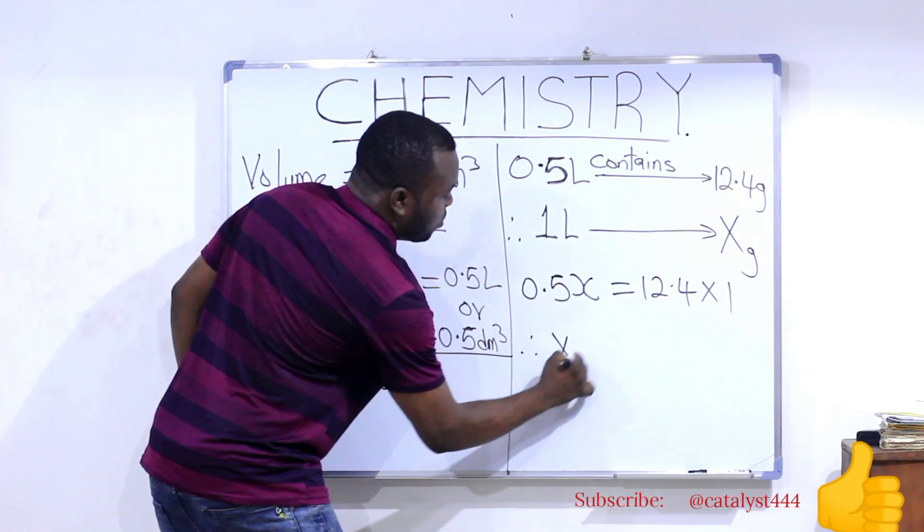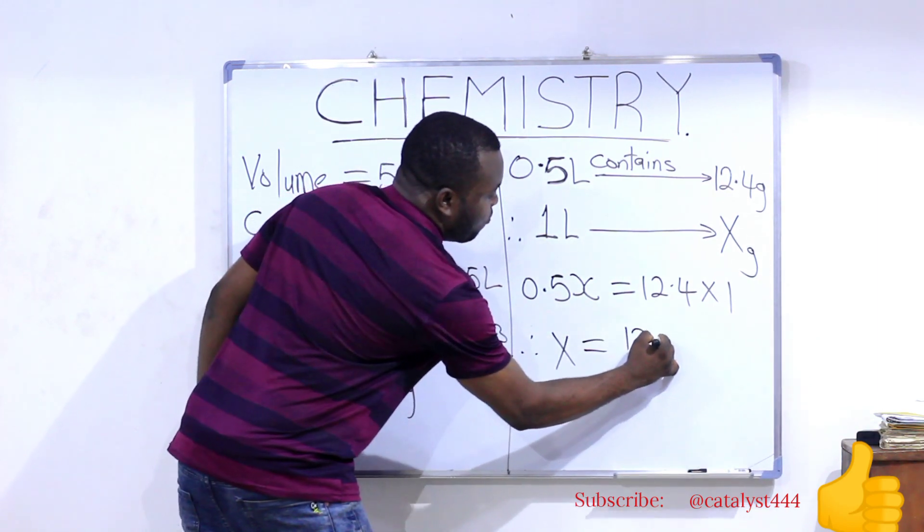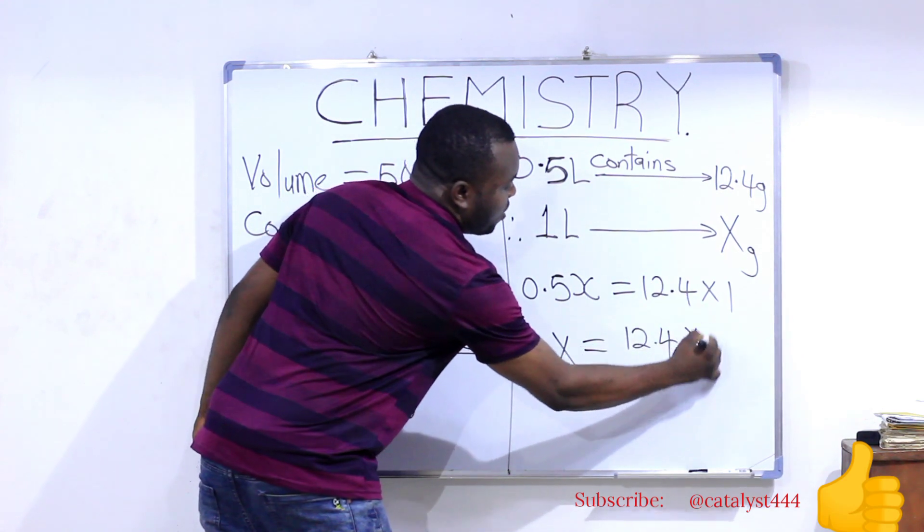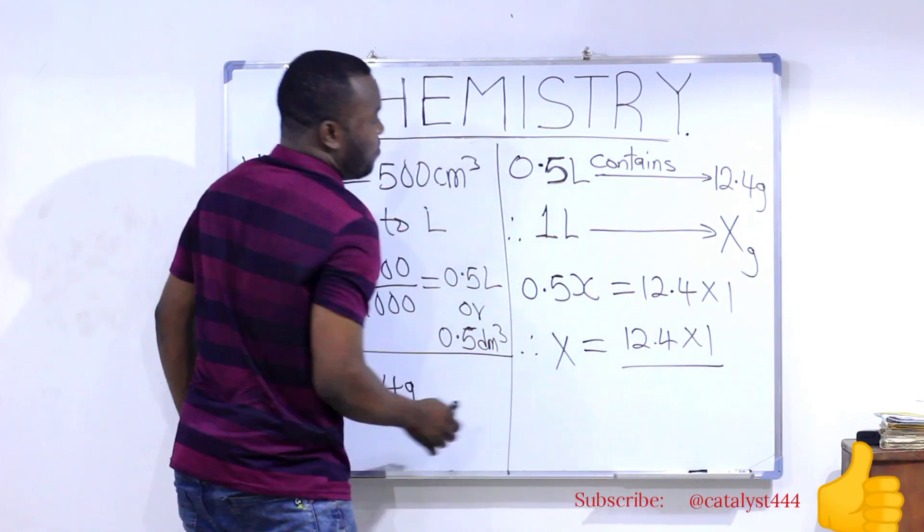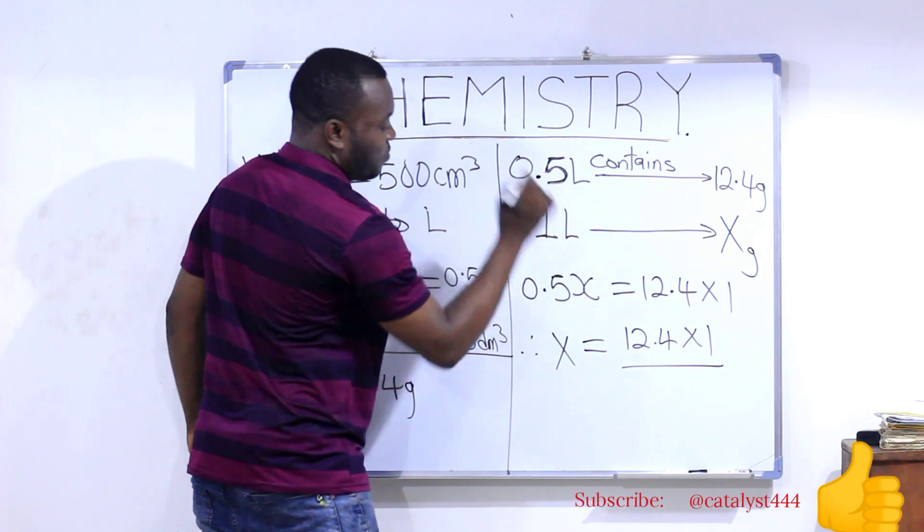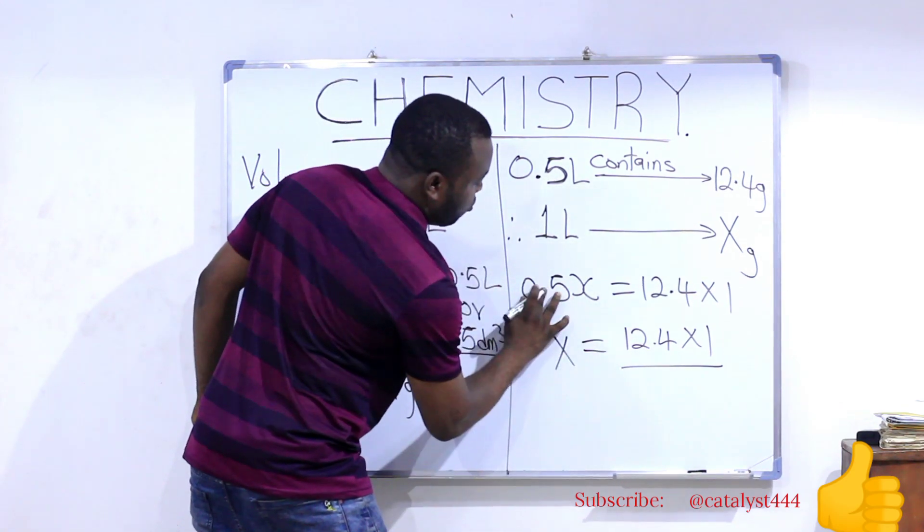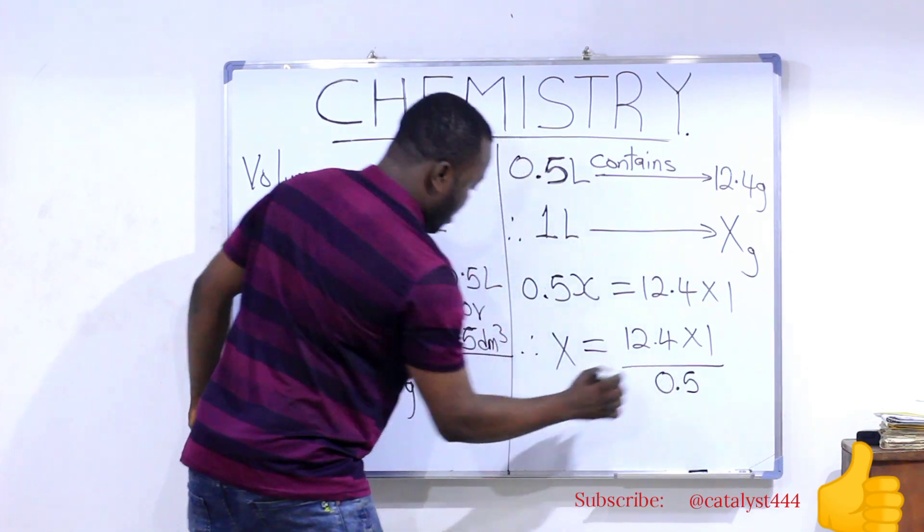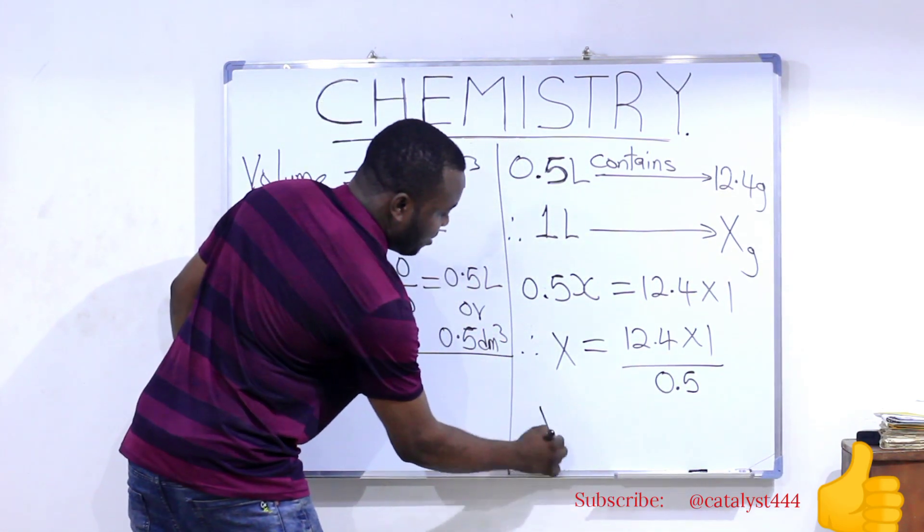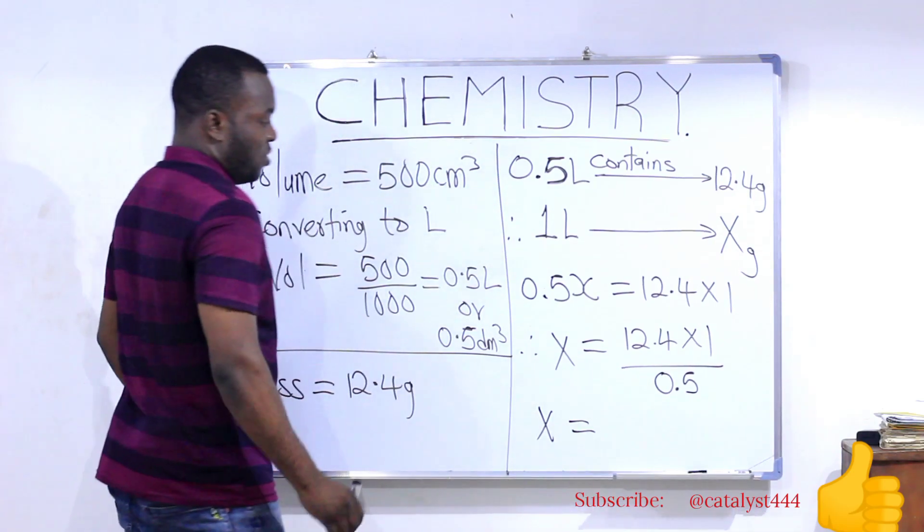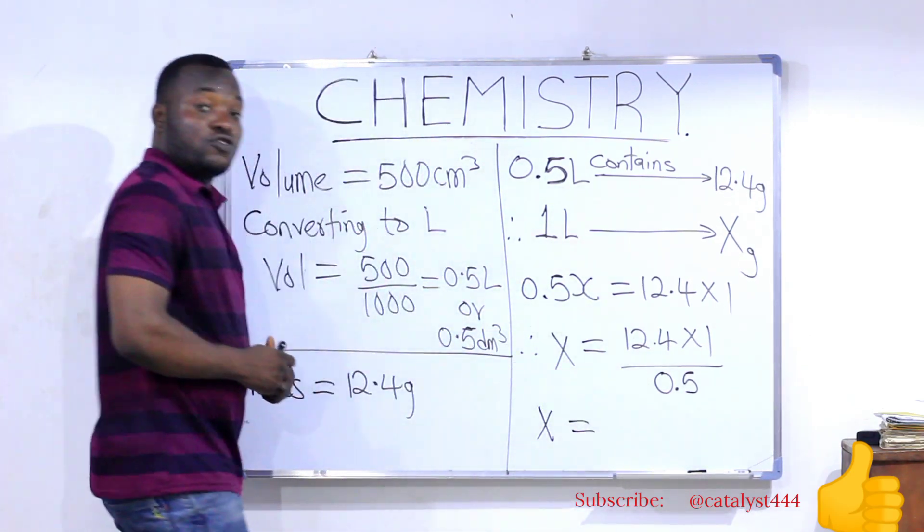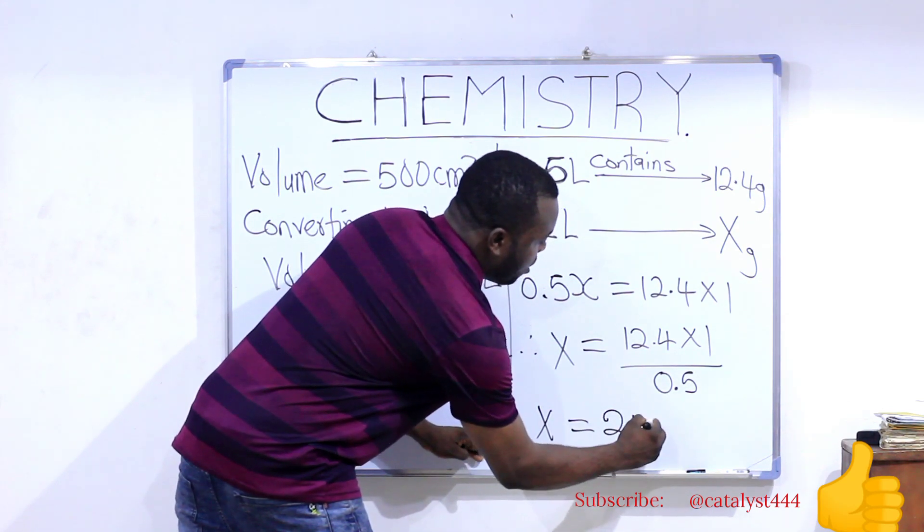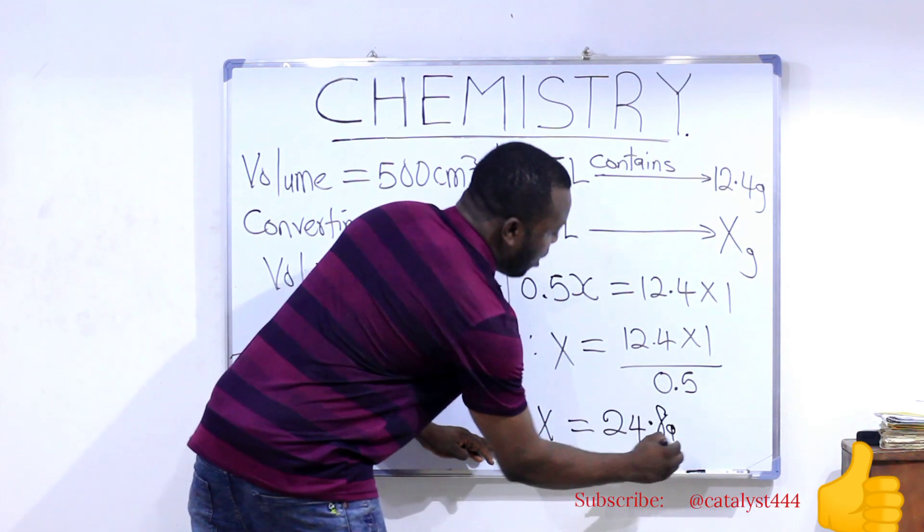our x becomes 12.4 multiplied by 1 divided by the coefficient of x which is 0.5. Our final answer gives us, if you punch this with your calculator, you are going to get 24.8 grams.